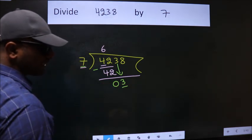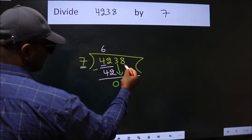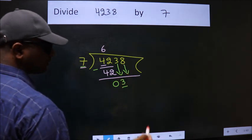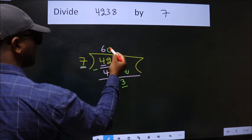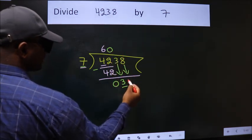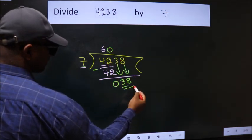So we should bring down the second number. And the rule to bring down the second number is put 0 here. Then only we can bring down this number. So, 38.